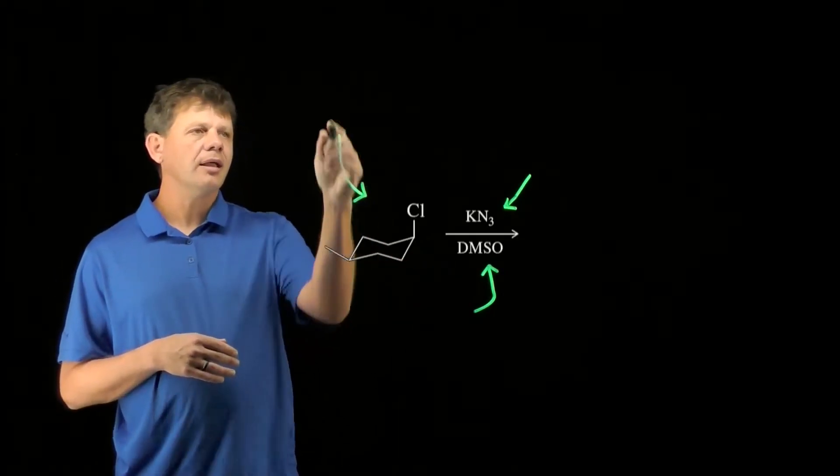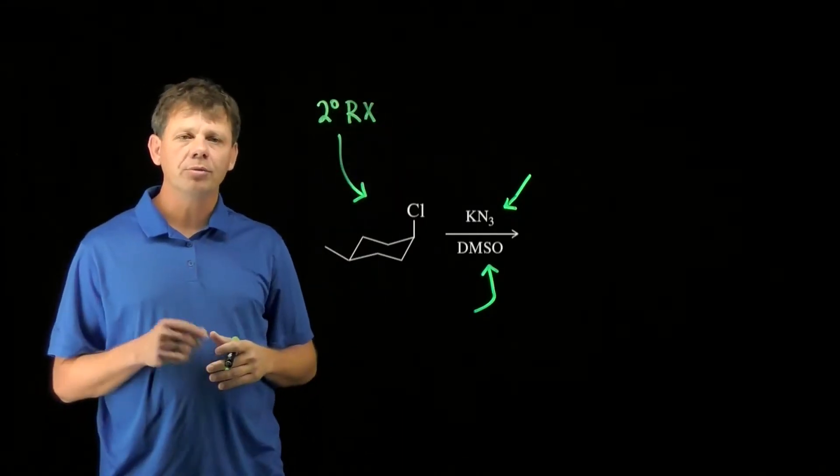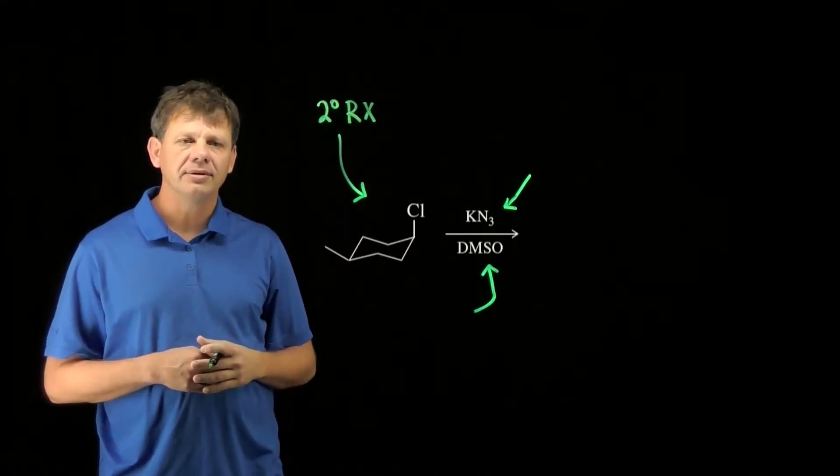We'll start by looking at the alkyl halide, which is secondary. A secondary alkyl halide can go through either the SN1 or SN2 mechanism.